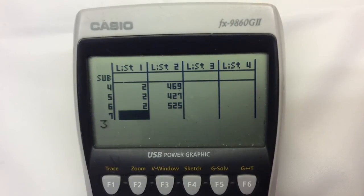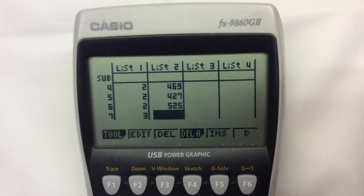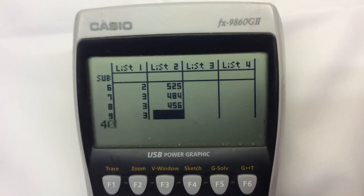And then we've got our three for our third group, and they are 484, 456, 402.